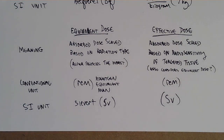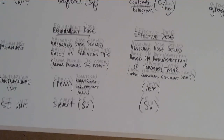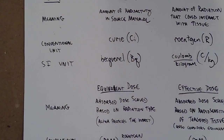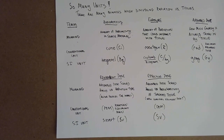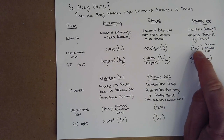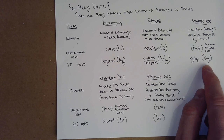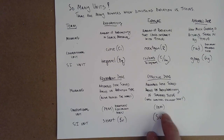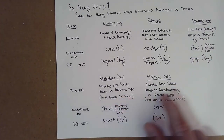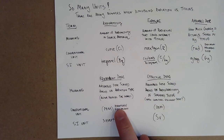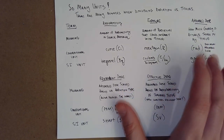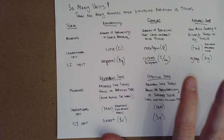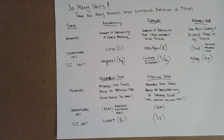That's our unit zoo. Most commonly you'll see rads in pop culture, Grays as the metric version, and a lot of Sieverts and REMs. These are the most significant for biological applications because they get to the nitty-gritty about the amount we really need to worry about as far as exposure goes.